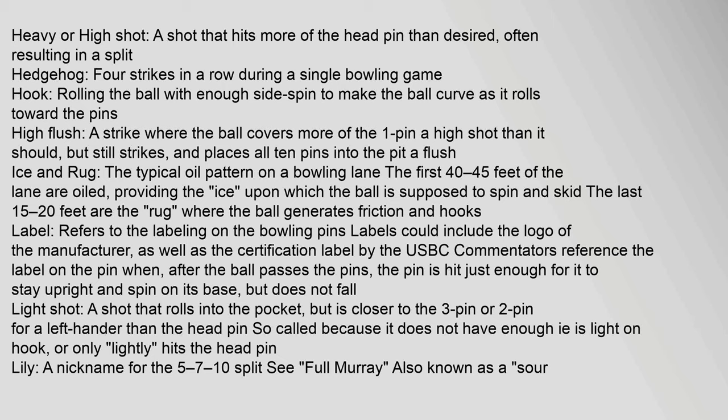Hook: rolling the ball with enough side spin to make it curve as it rolls toward the pins. High flush: a strike where the ball covers more of the one pin than it should, but still places all 10 pins into the pit. Ice and rug: the typical oil pattern on a bowling lane — the first 40 to 45 feet are oiled, providing the 'ice' upon which the ball spins and skids; the last 15 to 20 feet are the 'rug' where the ball generates friction and hooks. Label: refers to the labeling on the bowling pins, including the manufacturer's logo and USBC certification label.